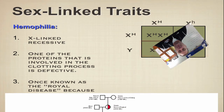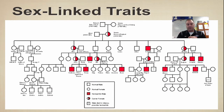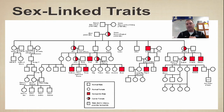Hemophilia was at one time known as the royal disease because royals would often marry only royals, so the allele stayed in their gene pool. These are the royal families in Europe from mainly the 1700s through the 1800s, and as you can see, a big chunk of them had the hemophilia allele or were carriers.